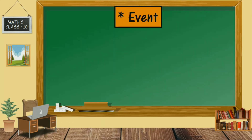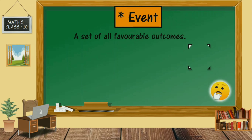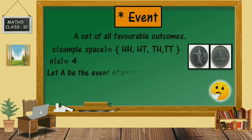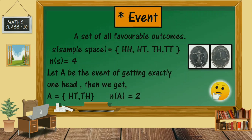Next is event. A set of all favorable outcomes is called an event and is denoted by capital letters. For example, if two coins are tossed, then the sample space is HH, HT, TH, and TT. So the number of elements in the sample space is equal to 4. Let A be the event of getting exactly one head. Then we get A equal to {HT, TH}. So the number of elements in A equals 2.